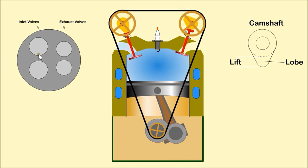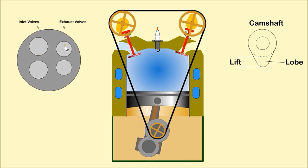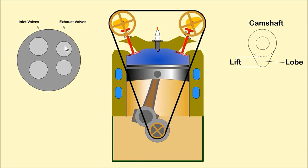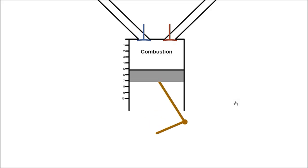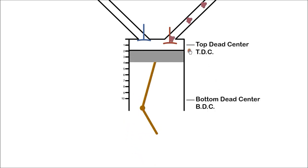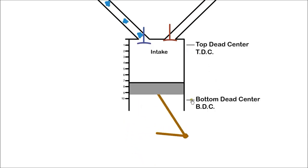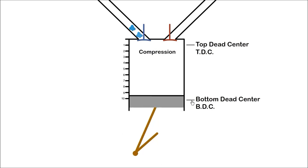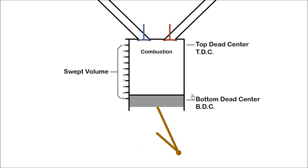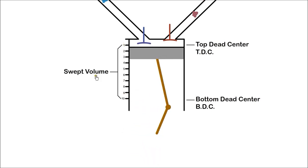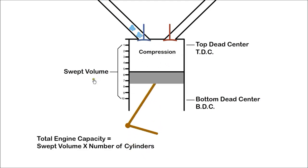The top position of the piston is called top dead centre, TDC, and the bottom position is called bottom dead centre, or BDC. The volume between the two is called the swept volume. The total engine capacity is swept volume multiplied by the number of cylinders.